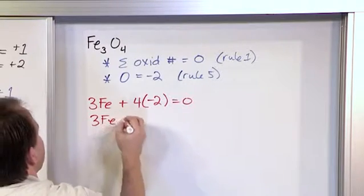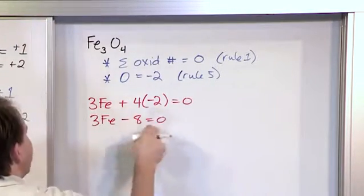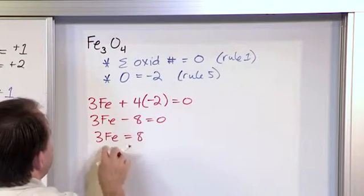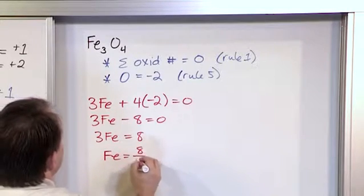So we have 3 times the iron minus 8 equals zero. We move the 8 to the other side, so we'll have 3Fe equals 8. And when we divide by 3, we have Fe is 8 over 3.